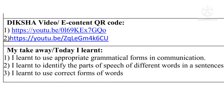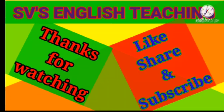Last part — my takeaway or today I learnt. What did we learn from this activity? First, I learnt to use appropriate grammatical forms in communication — savwada madhe yogya vyaakrana cha yogya form kasa karai cha, kiwa yogya part of speech kasa waparai cha. Second, I learnt to identify the part of speech of different words in sentences — vakya til shabdan cha dencha jati apan olkhaila shiklo. Third, I learnt to use correct forms of words — shabda cha yogya form kasa waparai cha. In this way, we have completed this activity.